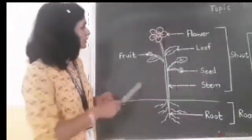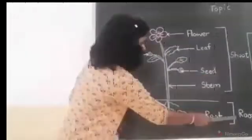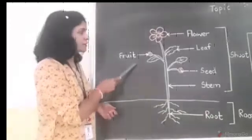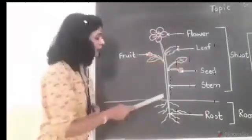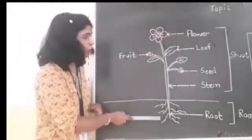Yes, so the plant is mainly divided into two parts, shoot and root. The part which grows above the ground, it is called shoot. And the part which grows below the ground, it is called root.